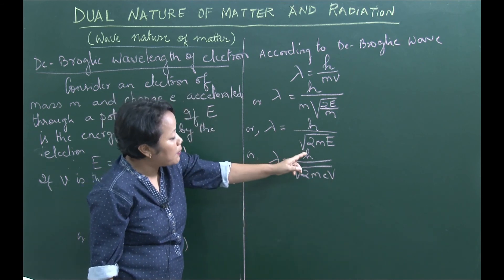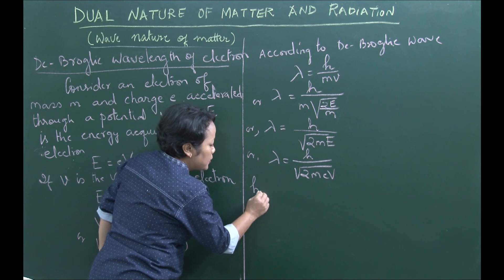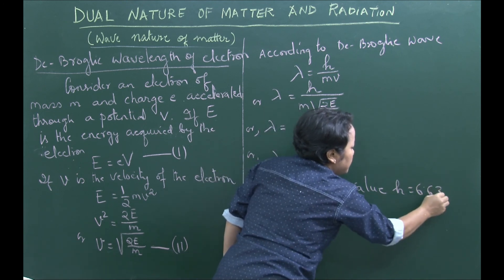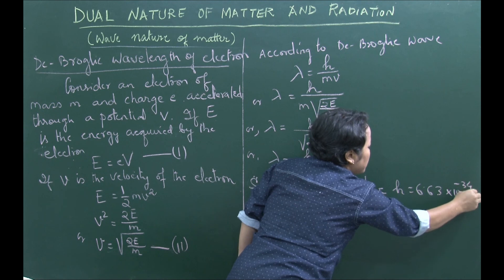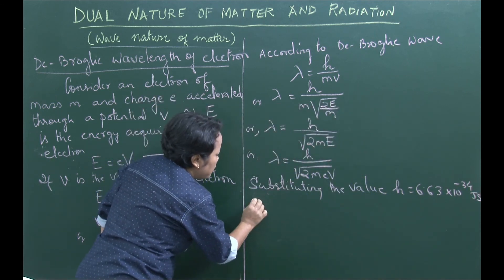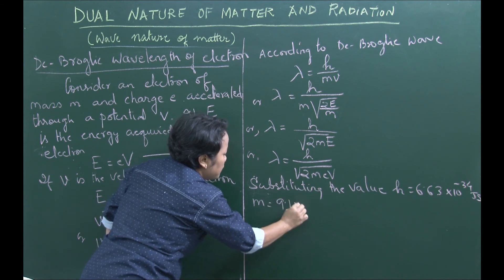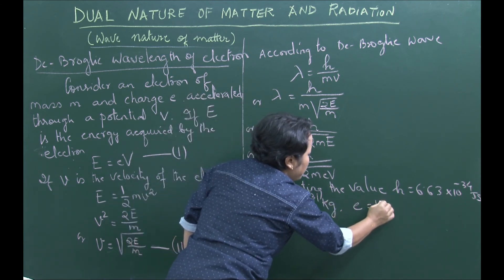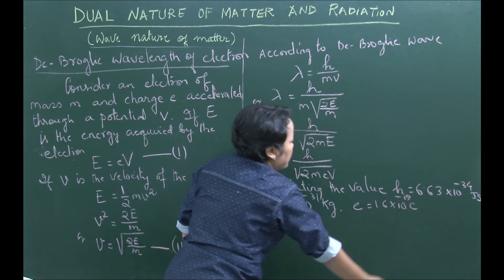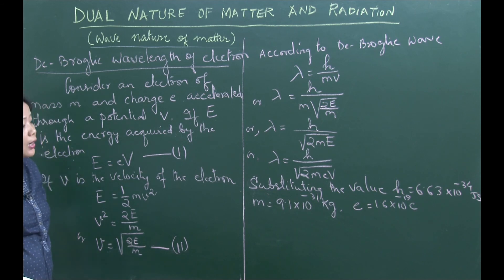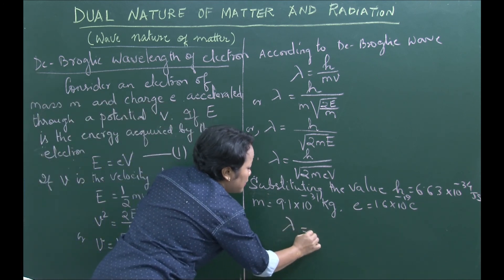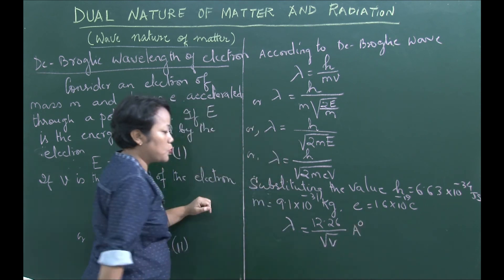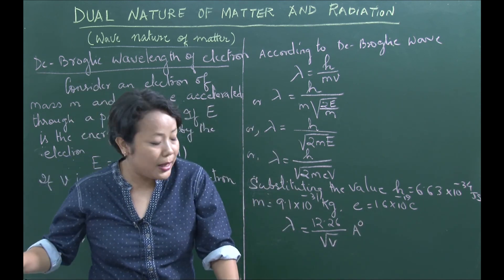Substituting the values — h = 6.63 × 10⁻³⁴ J·s, m = 9.1 × 10⁻³¹ kg, e = 1.6 × 10⁻¹⁹ C — into λ = h/√(2meV), the wavelength of the electron simplifies to λ = 12.26/√V Angstrom.